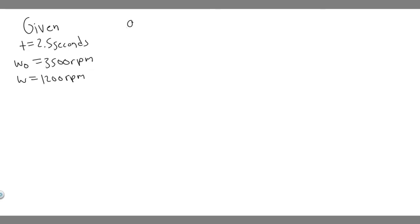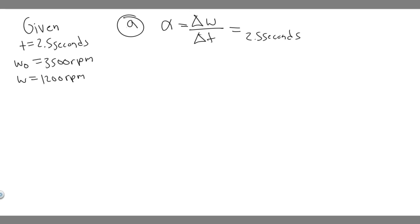Let's start with part A — its angular acceleration, which is alpha. You need to know that alpha is equal to the change in omega over the change in time — the change in angular velocity over the change in time. We know the change in time is 2.5 seconds. The change in angular velocity is just omega final minus omega initial, since we know both the initial and final values.